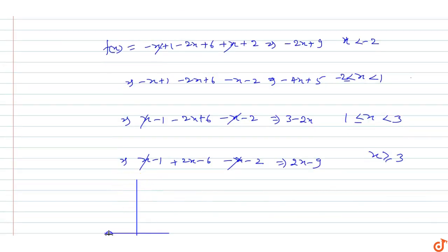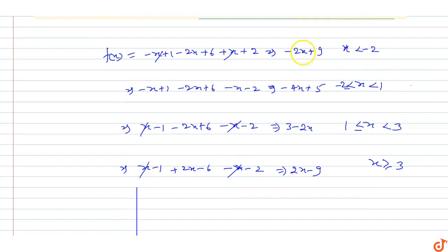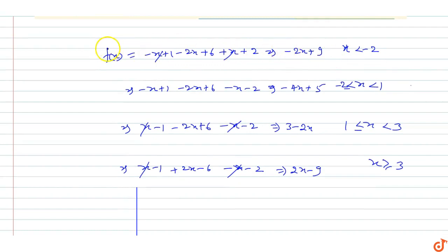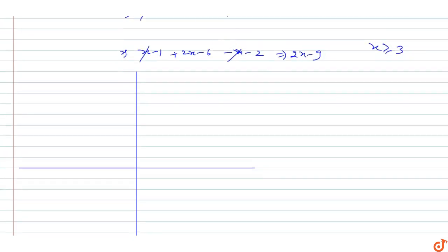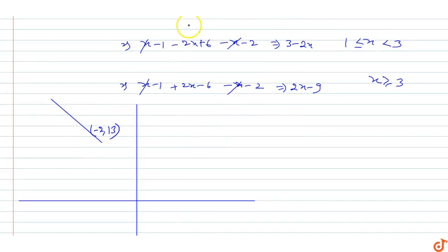Now let's draw the graph of f(x). When x is less than minus 2, f(x) = minus 2x + 9. At x = minus 2, the value is y = 13. From minus 2 to 1, the function is 5 minus 4x, which has a negative slope.